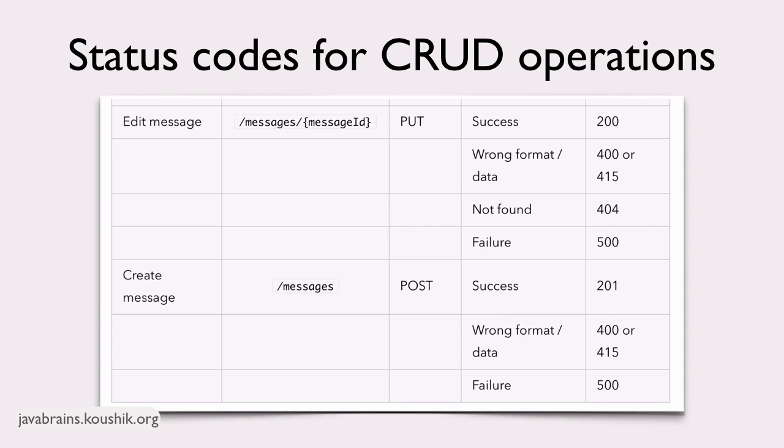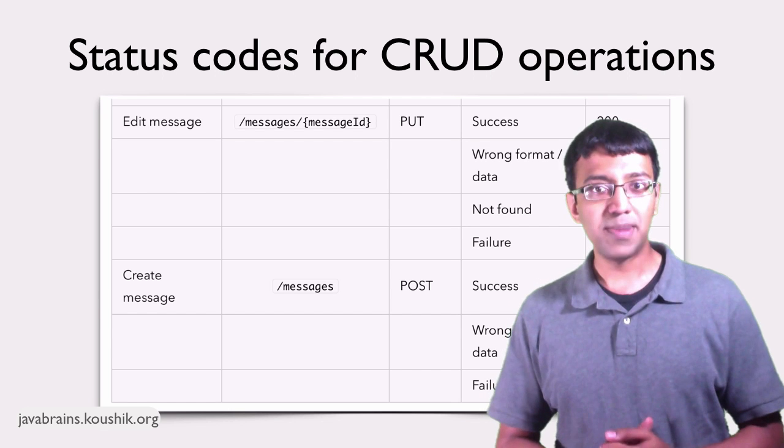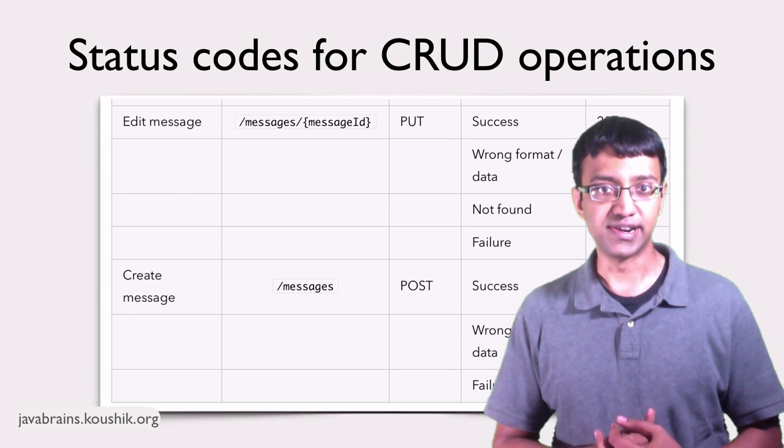And finally, create message. Get a POST request to /messages. You return 201 if you're able to successfully create the message, 201 is Created. Again, you return 400 or 415 if the body is in the wrong format or has the wrong data. And you return 500 if there is an error in creating the resource. I hope this gives you a better idea of the status codes to be returned.